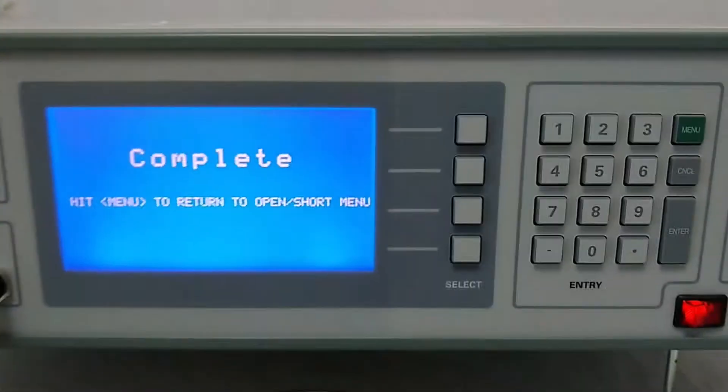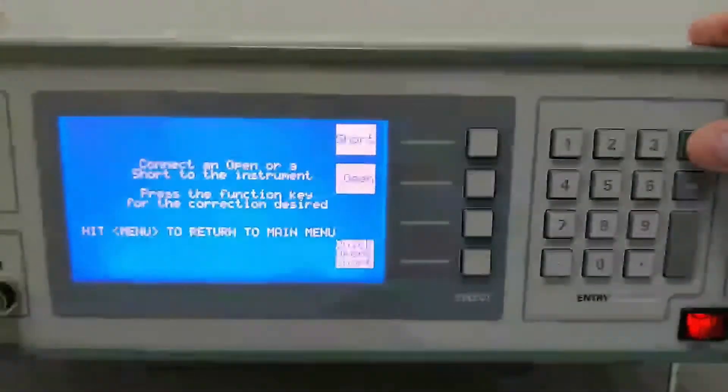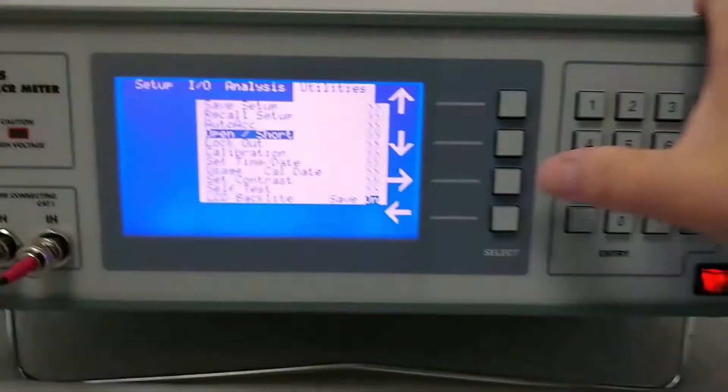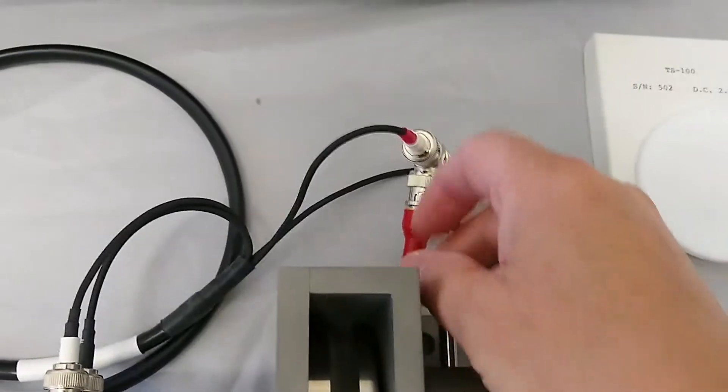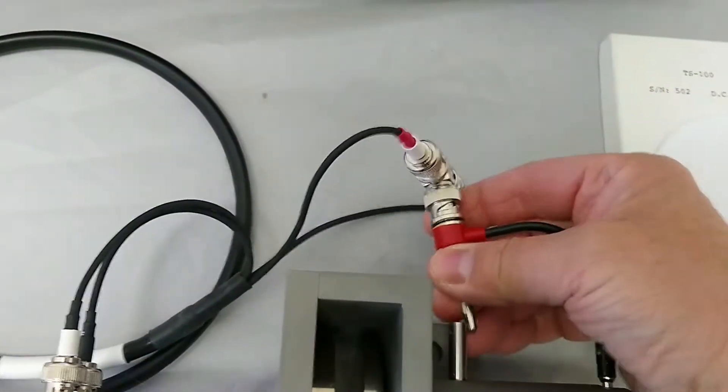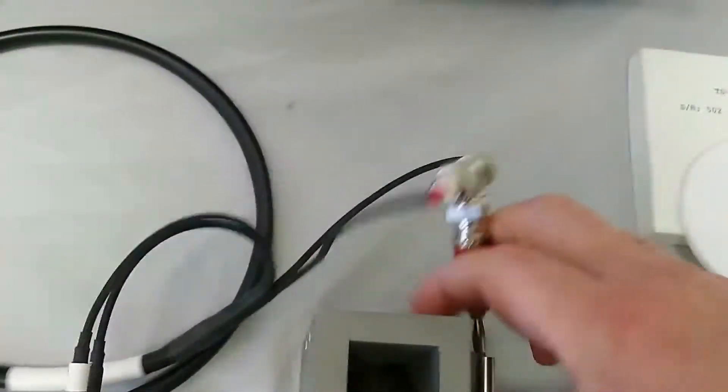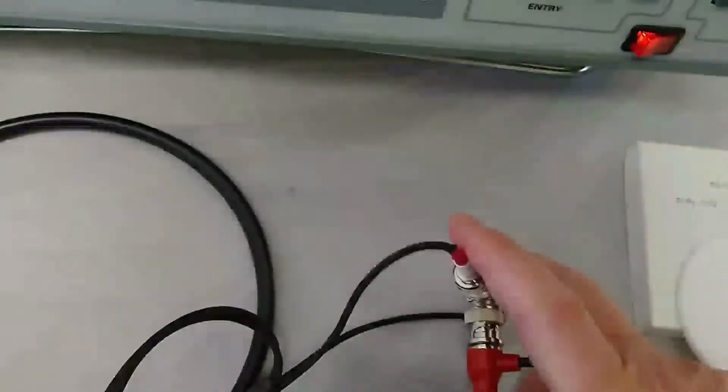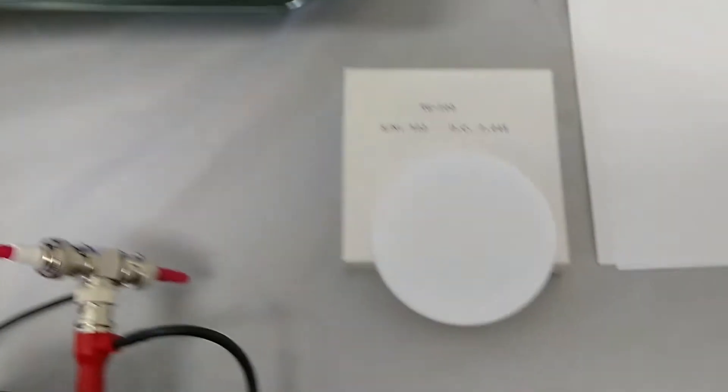At this point, the open has completed. We can press the menu key and the menu key once more to get back. At this point, we're back to the measurement menu. We can then reconnect the cell by reconnecting the banana so that it's connected into the cell.